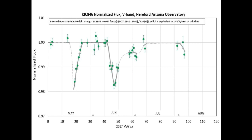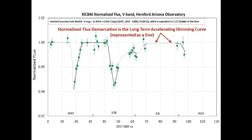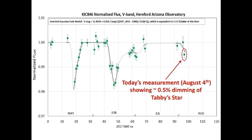This is a flux graph of Tabby's Star provided by Bruce Gary, taken in the V-band. The normalized flux level indicated on this graph is the long-term accelerating dimming curve. As you can see, today's measurement is showing a slight dip at approximately one-half of a percent below nominal flux level. We will be sure to watch this closely to see if this may be the beginning of a new and significant dip.